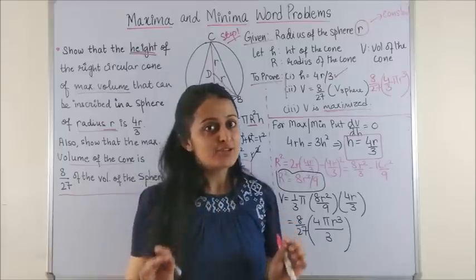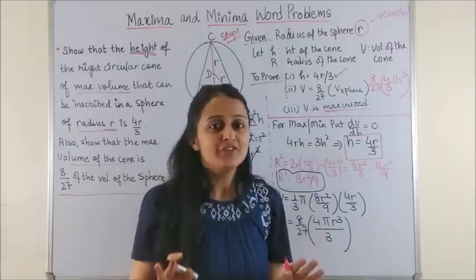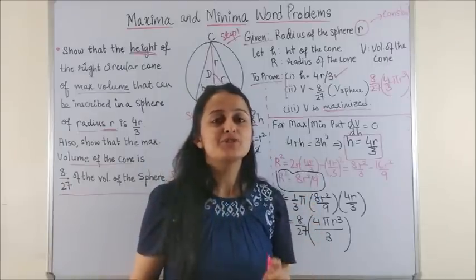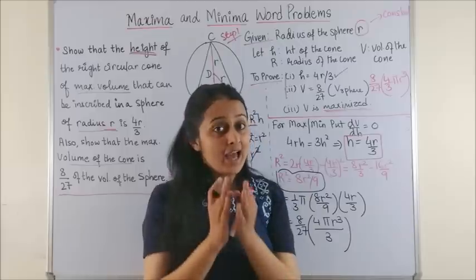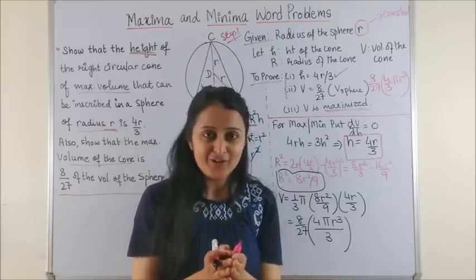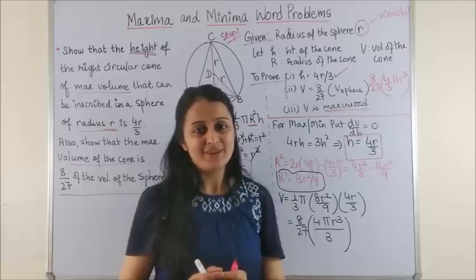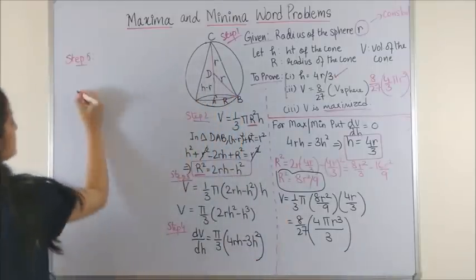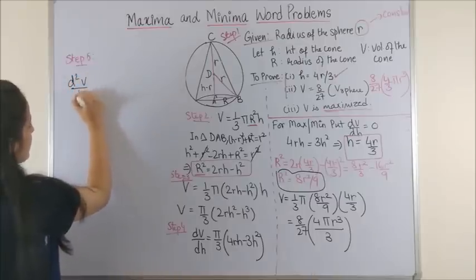So we proved that volume of the cone is 8 by 27 times volume of the sphere. Wasn't this simple? But wait, this is not the end of the question. Don't forget your Step 5, which was to double differentiate and ensure that yes, the volume is indeed getting maximized.